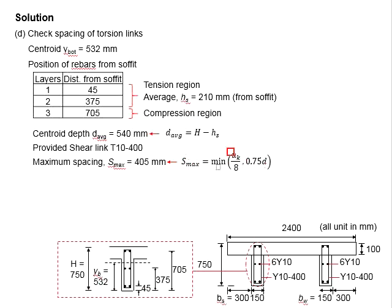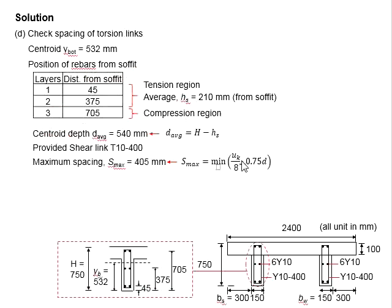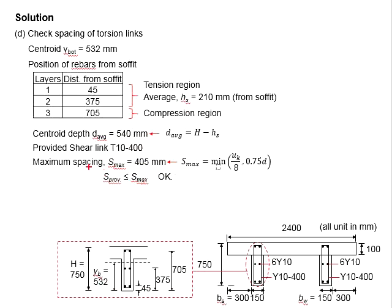Next, you will need to use the perimeter value calculated previously, divided by 8. The smaller value of the two — either 0.75 times effective depth or perimeter divided by 8 — will be the maximum allowable spacing. This spacing is checked against the spacing provided, and it is found that the provided spacing is less than the maximum allowable spacing. Therefore, the provided spacing is adequate.